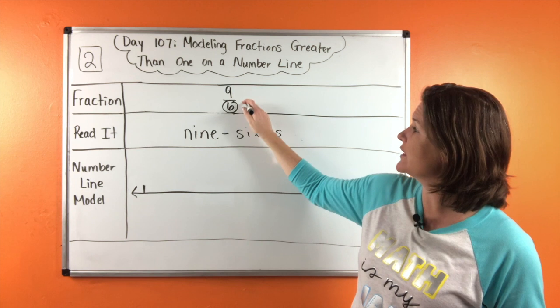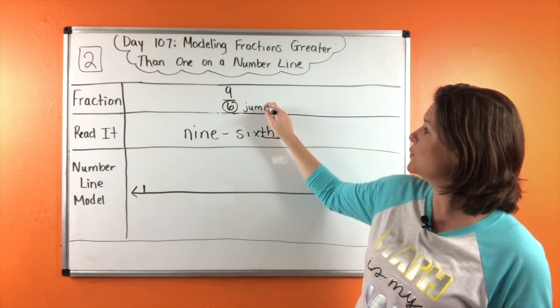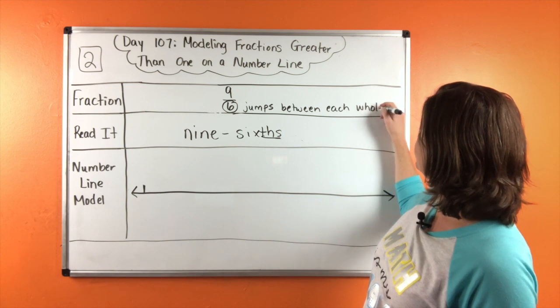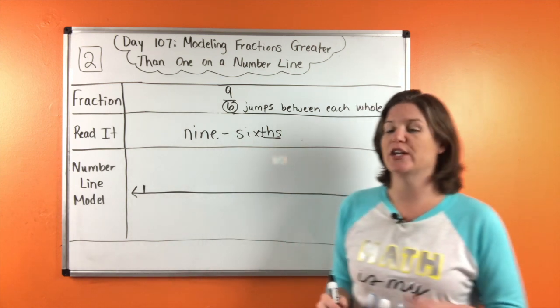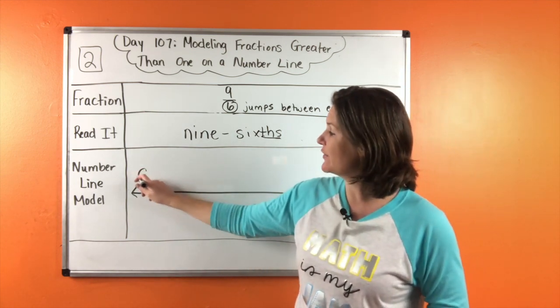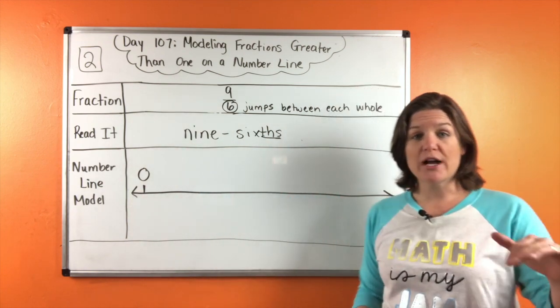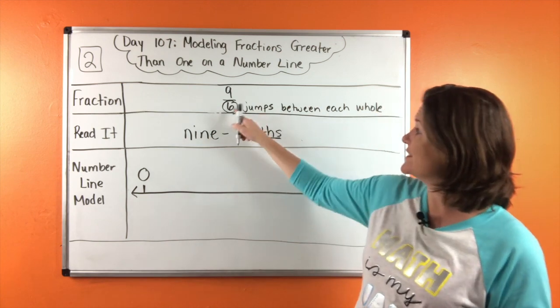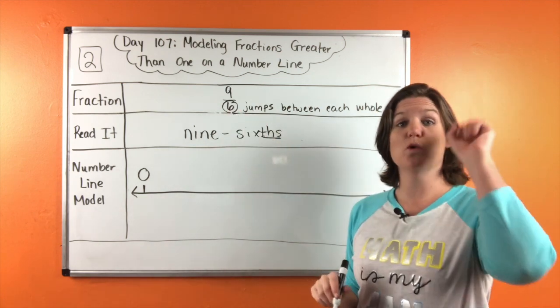So the six represents the jumps between each hole. That's important. The jumps between each hole. So here we're starting at the whole number zero. There's no fraction involved. It's just a whole number zero.